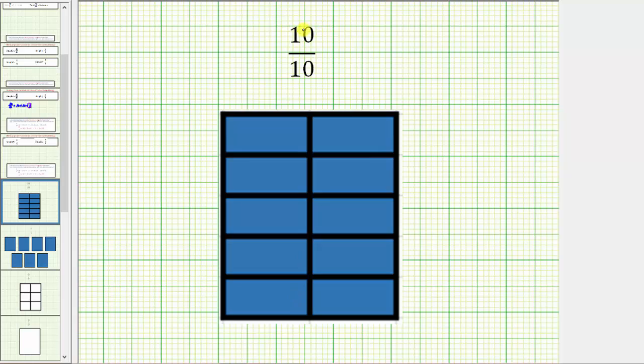Because the numerator is 10, we want all 10 parts or pieces, which gives us one whole. Again, 10 tenths equals 10 one-tenths, which equals one whole.